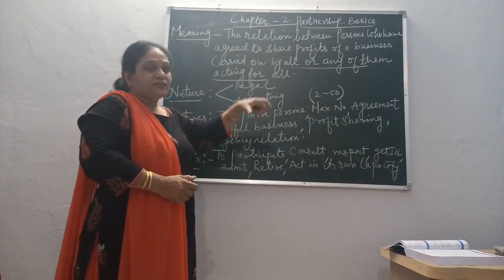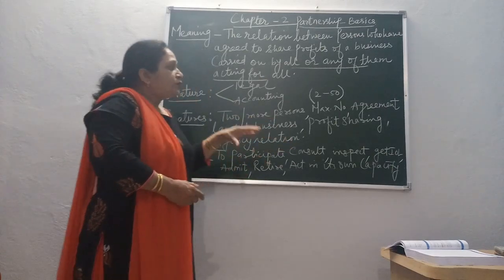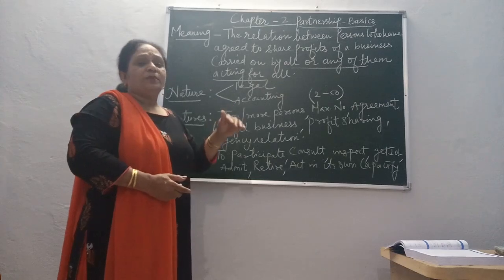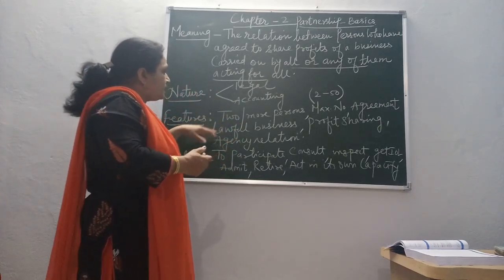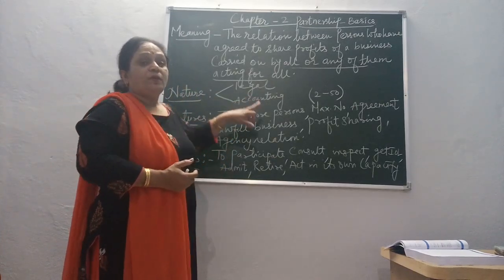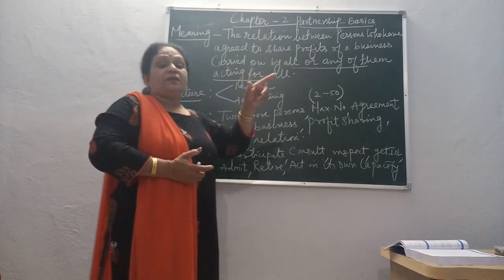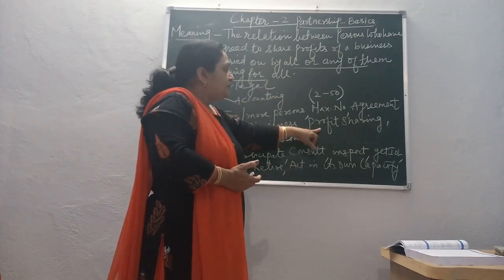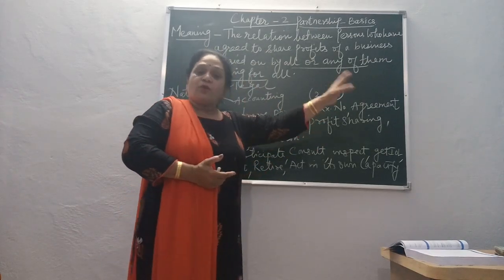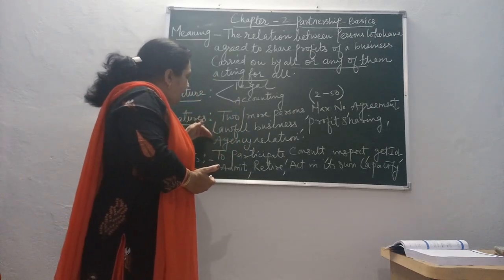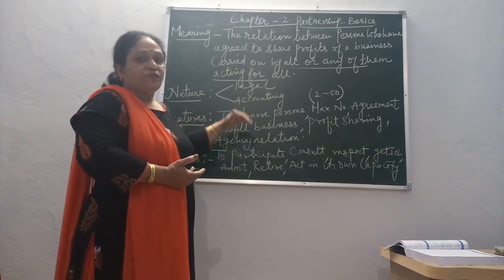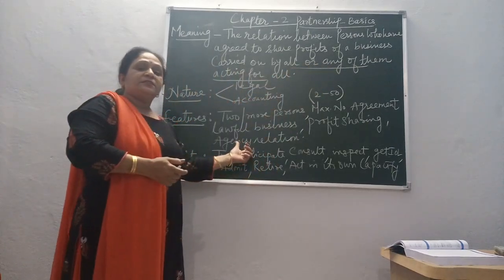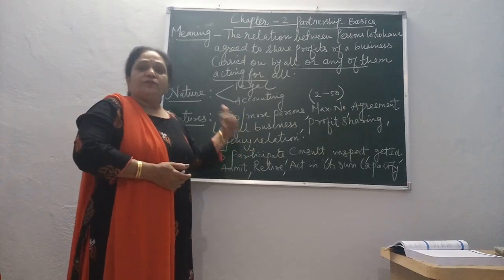There has to be an agreement amongst the partners to form a partnership firm. This agreement can be in writing or oral. It should be a lawful business — partnership cannot exist for any illegal business. The motive should be to share profits amongst the partners. The final feature is the agency relationship: every partner is an agent as well as the principal of the firm.